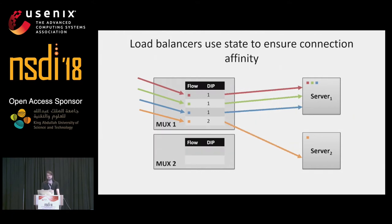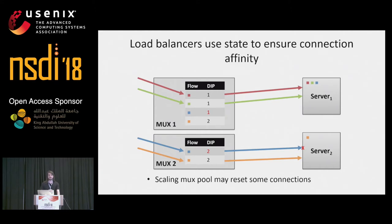Now let's see what happens when we add a second mux. The border router is going to send some of the pre-existing connections to the second mux. The second mux does not share any flow state with the first one, so it rehashes all of the connections that hit it. In this case, the blue flow gets rehashed to the second server, and it breaks.